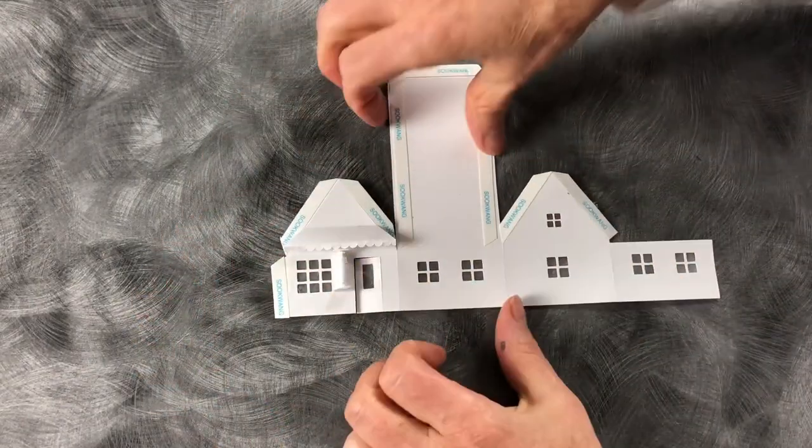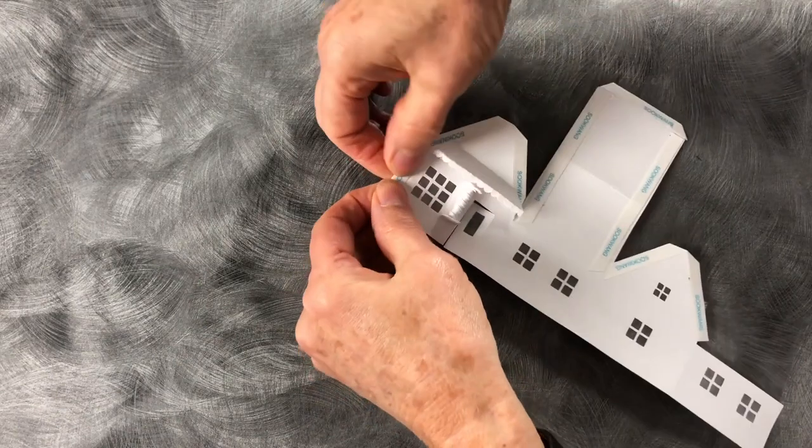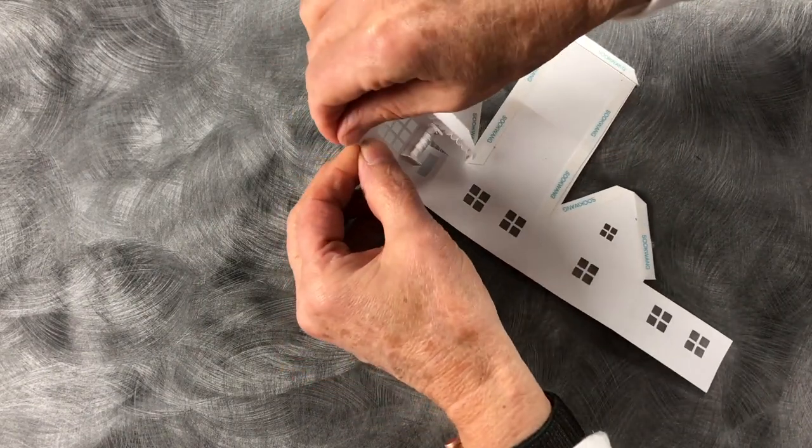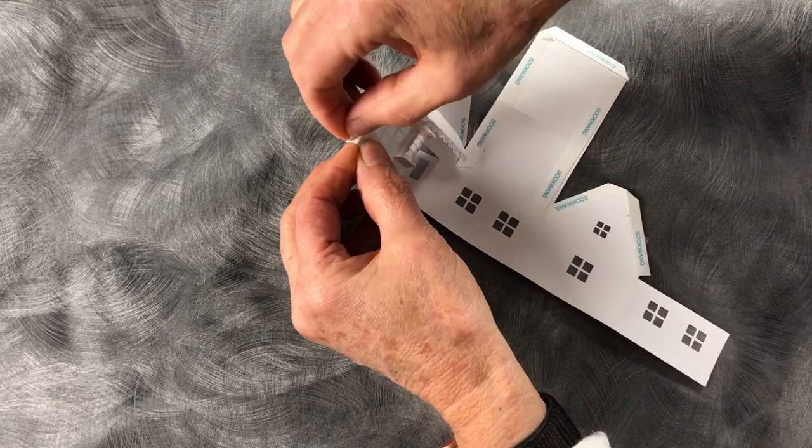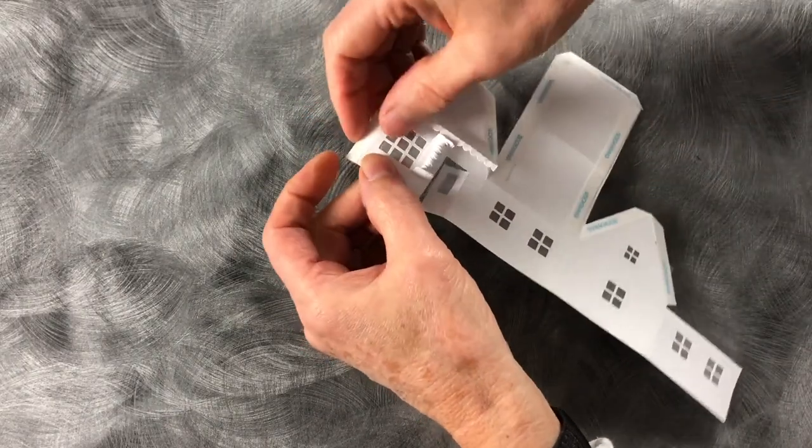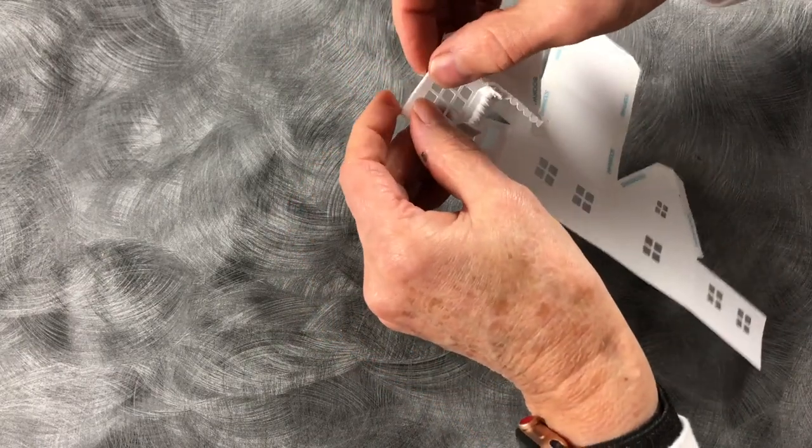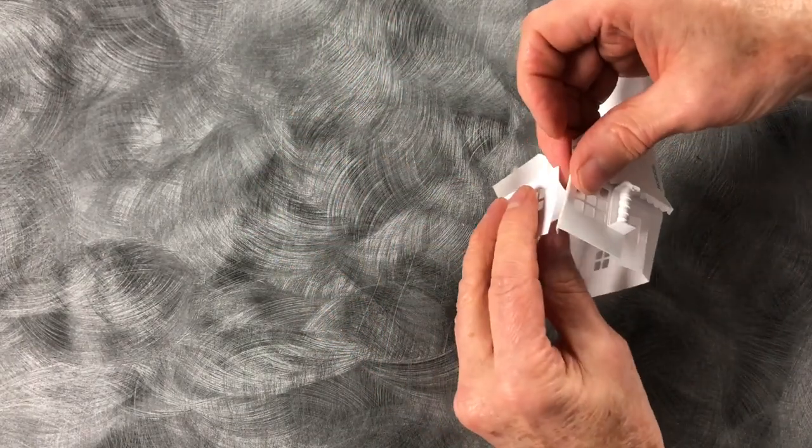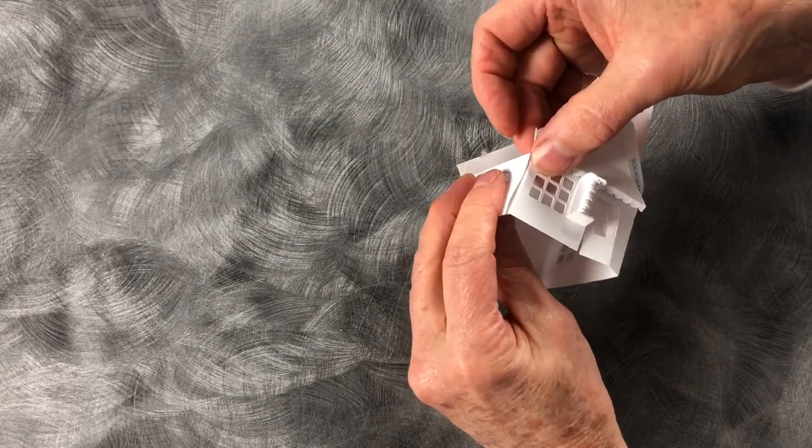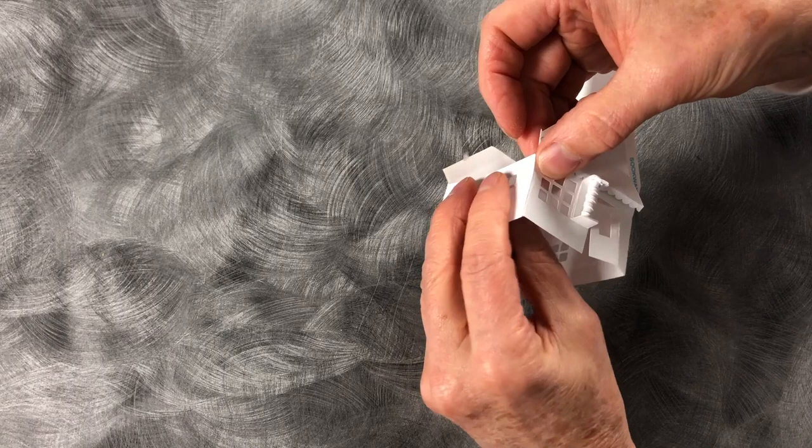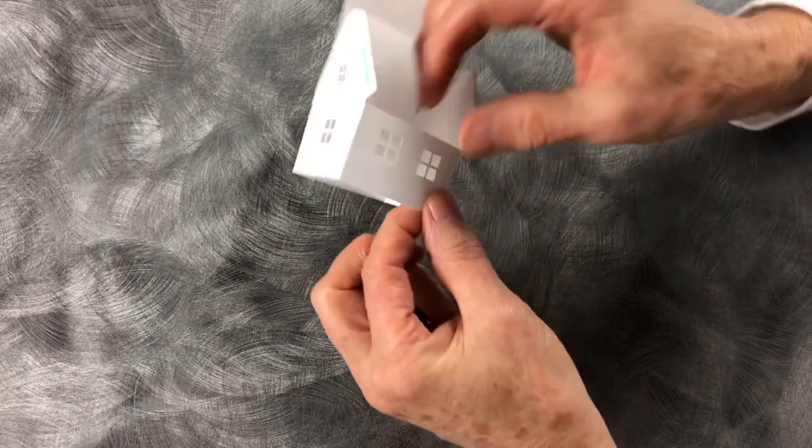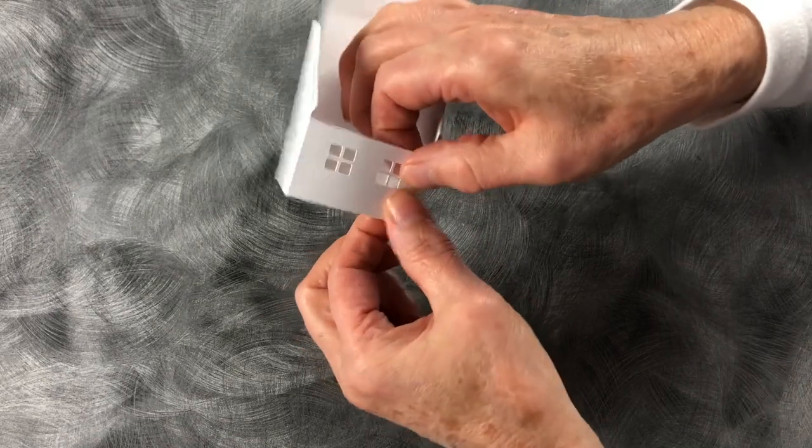There we go. Now we can start assembling the building. I like to first make it square. So I start with the end tab here. Peel the score tape from that tab, wrap it around, line up the corner but also the bottom edges.